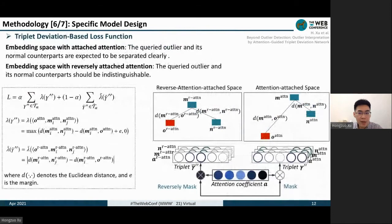The next component is the most important one, the triplet deviation-based loss function. We have two goals here. The first one is normal counterparts: the normal counterparts and the query outlier are expected to be separated clearly in the embedding space with attached attention. This is consistent with the definition in the problem statement. That is, the outlier should clearly demonstrate outlierness in the interpretation subspace.